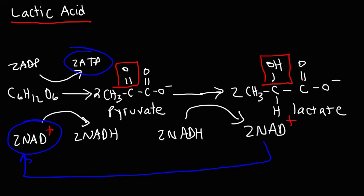Both in lactic acid fermentation and in ethanol fermentation, we get two ATP molecules per glucose molecule. Lactic acid fermentation occurs in the tissues of muscle cells. That's a basic review of ethanol fermentation and lactic acid fermentation, which are two forms of anaerobic respiration.